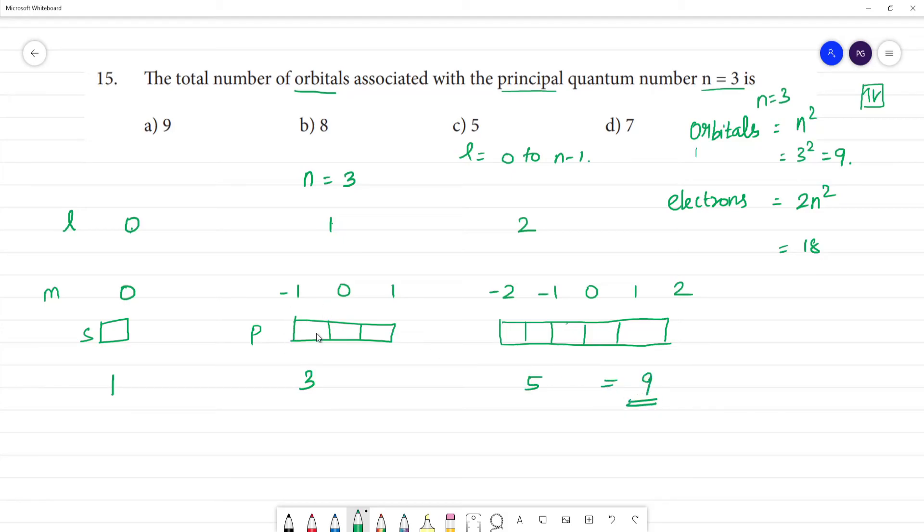So one orbital is one box. This is one orbital. Number of electrons is 1, 2. The number in one orbital is 2. 9 × 2 will be 18 electrons. So in the formulas, the answer is equal to 9.